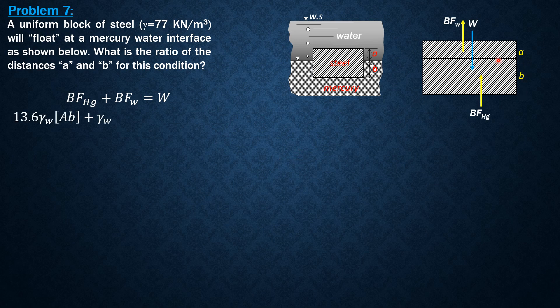Buoyant force in water is gamma of water, the specific weight of water, times area times a, capital A times a. Then the weight is specific weight of steel block times volume, which is area of the bottom times quantity height a plus b.